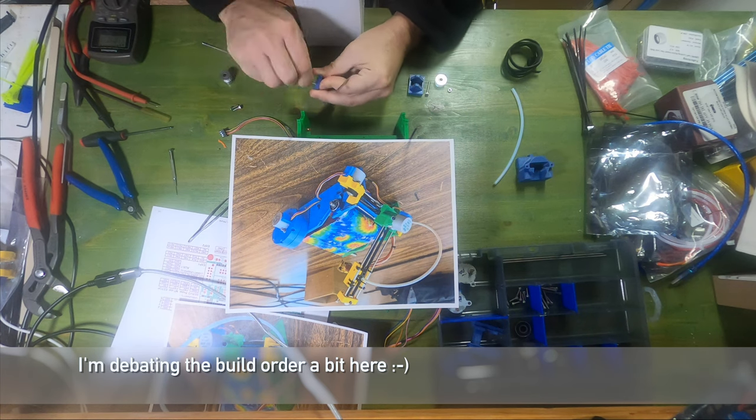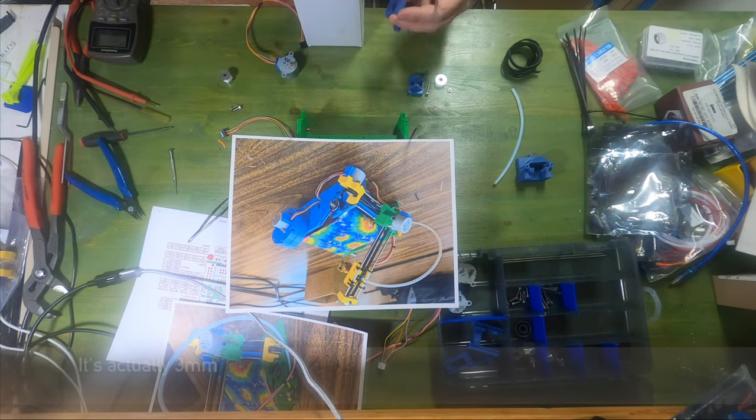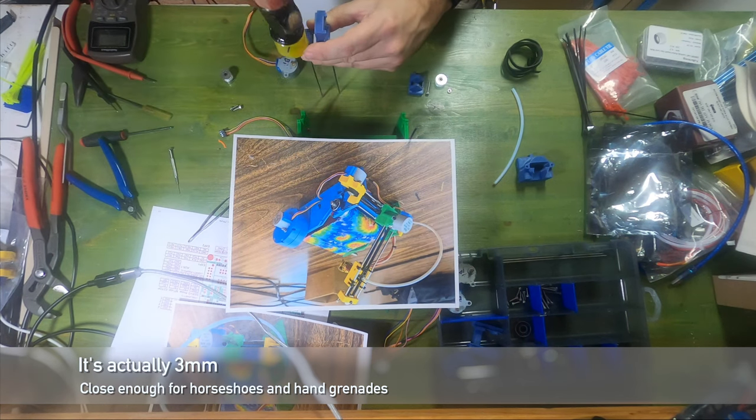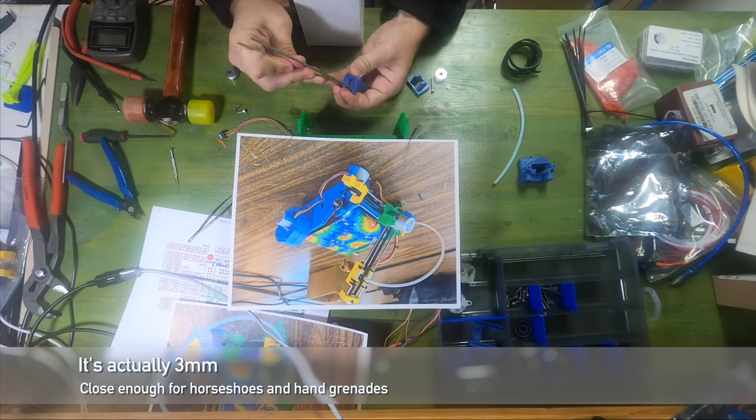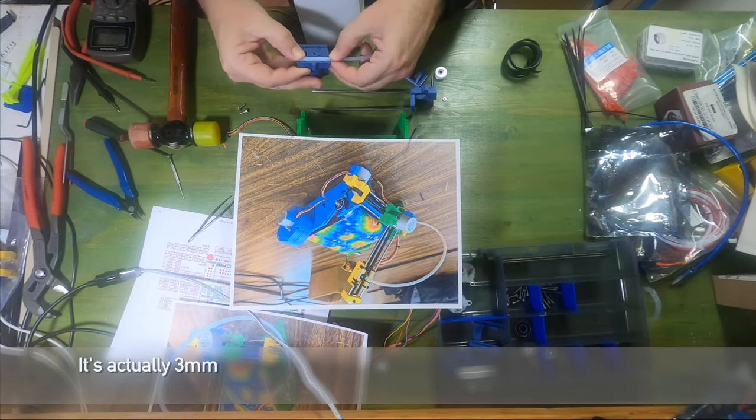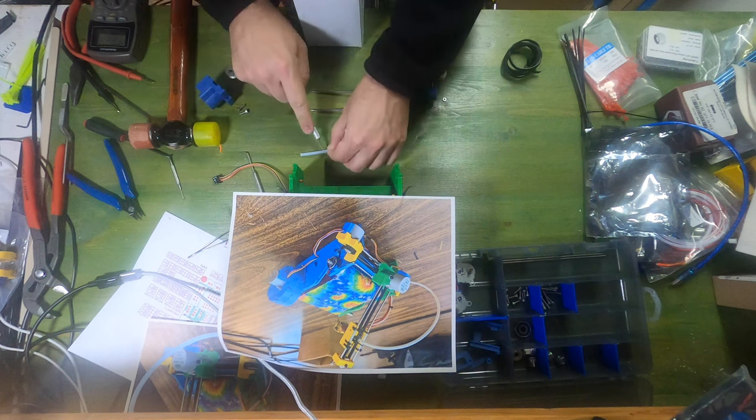So our smooth rods go in here. It's just a friction fit. Pretty rough. This is 4mm. So a 4mm drill will rough that out if you need to. So this goes on like so. This tube is zip tied in place. I'm going to get a knife.